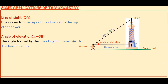If you see this figure here, the observer is at this place, this is a tower, and this is the top of the tower. The observer is viewing upwards to the top of the tower. This line drawn from the observer's eye to the top of the tower, point A, is called line of sight.